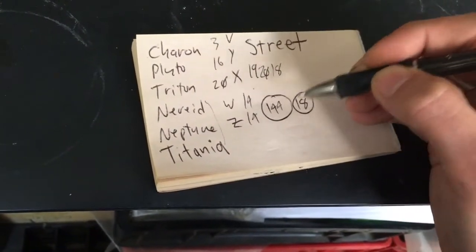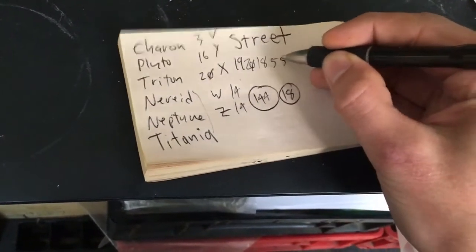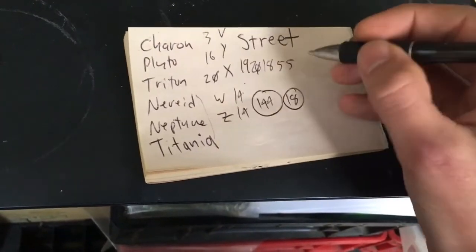Now the reason it's circled is because you've got to use it again for the E, because it's a 14, 14, that's your E, 5th letter, 5th letter. Now the T again is Titania, and that's your 20th letter.